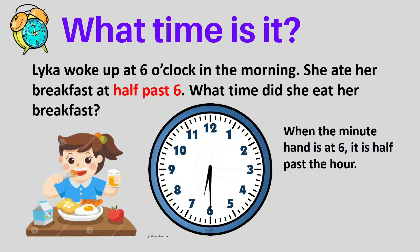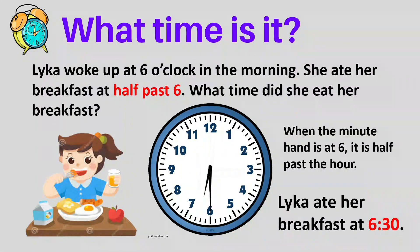When you tell the hour, look at the hour hand — it is between six and seven, so take the smaller number, which is six. The minute hand is pointing at six, and if you skip count by five starting at one until six, that's thirty. So the time is six thirty. She ate her breakfast at six thirty. When the minute hand is at six, it is half past the hour — thirty minutes.